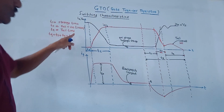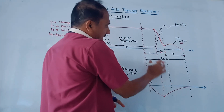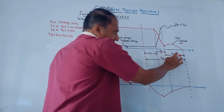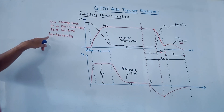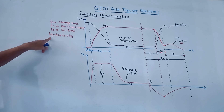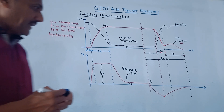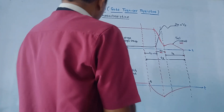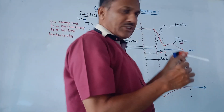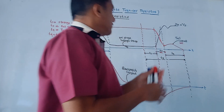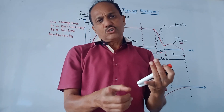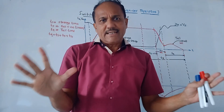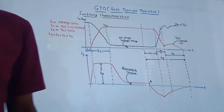The combination of all these time periods — ts, tf, and tt — represents the total turn off time period. Turn off time period is given by: tq = ts + tf + tt. Series and parallel operations of GTO are exactly the same as that of SCR.